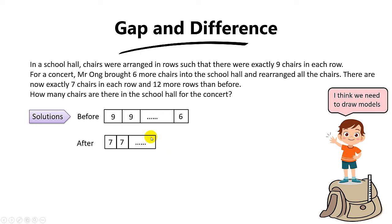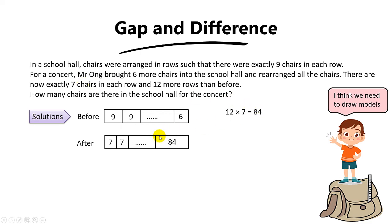The question says there are now 12 more rows than before. We can find the total chairs by taking 12 times seven, because there are 12 more rows than before and each row has seven chairs. So 12 times seven gives us 84 chairs.